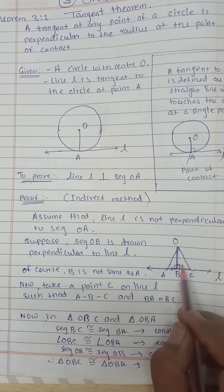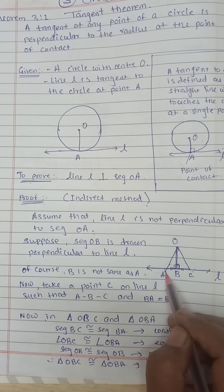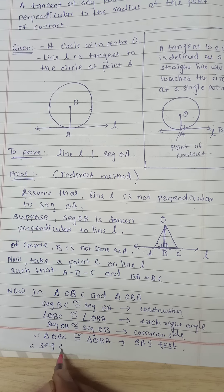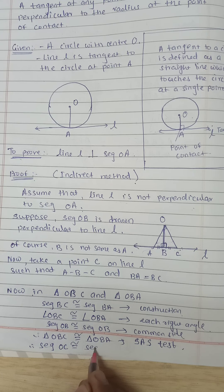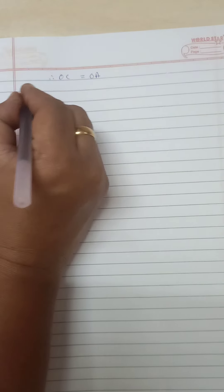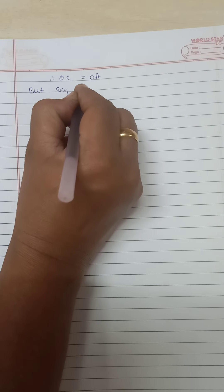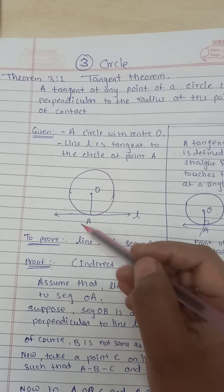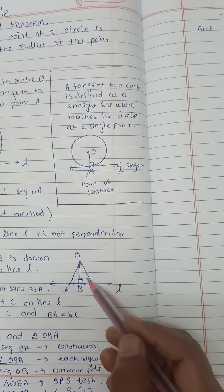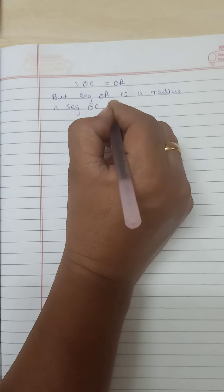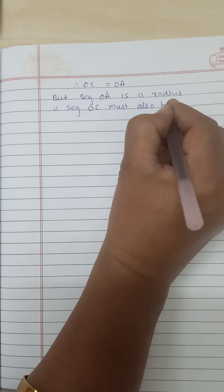As we have proved these two triangles are congruent, OA is also congruent to OC as corresponding sides of congruent triangles. Therefore, seg OC is congruent to seg OA. Since seg OA is the radius, OC is also equal to OA. Therefore, seg OC must also be a radius.